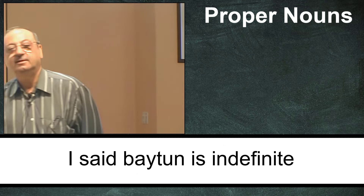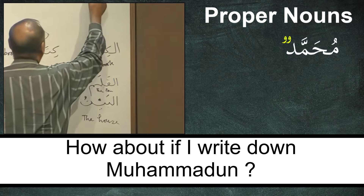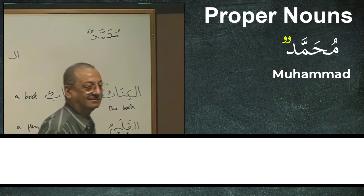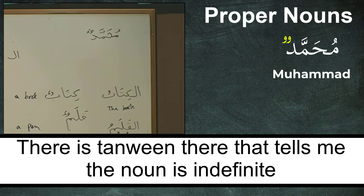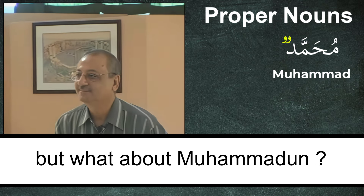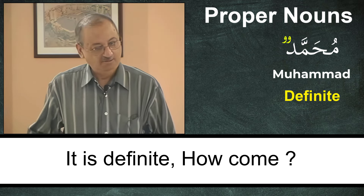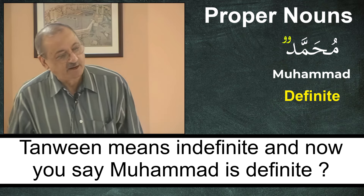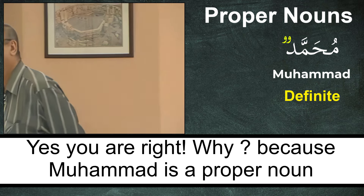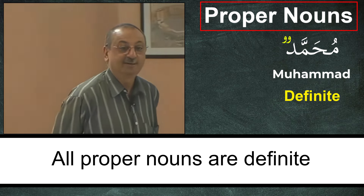I said 'Baytun' — it is indefinite. But how about if I write 'Muhammadun'? There is a Tanwin there, which always tells me that the noun is indefinite. But what about Muhammadun — is it definite or indefinite? It is definite. How come? Tanwin means indefinite, and now you say Muhammad is definite? Yes, you are right. Why? Because Muhammad is a proper noun, and all proper nouns are definite.